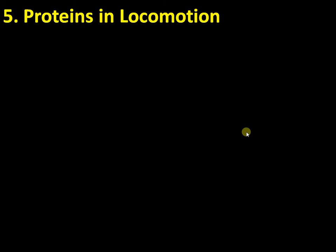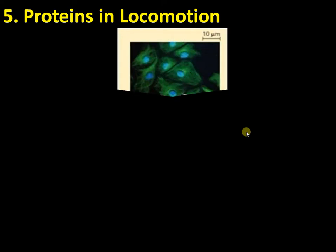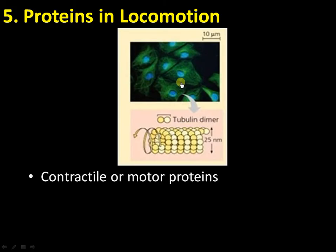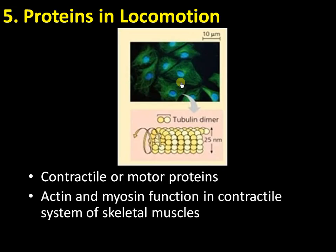The fifth function involves locomotion. Tubulin is involved in movement and organs of locomotion — here you can see its immunofluorescent structure. Contractile or motor proteins include actin and myosin, which are involved in muscle movements. Tubulin, present in microtubules, is responsible for the movement of chromosomes during mitosis and meiosis.